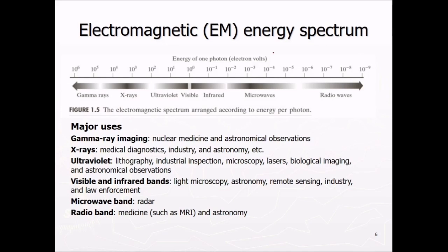This is electromagnetic spectrum right from your gamma rays to higher wavelength means these are radio waves and these are the frequency, energy of one photon, electron volts. Major uses of gamma rays in nuclear medicine astronomical observations, x-ray medical diagnostic industry and astronomy, ultraviolet in lithography, industry inspection, microscopy, lasers and biological imaging and astronomical observations.